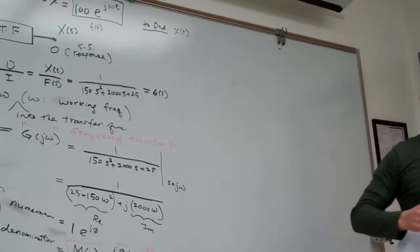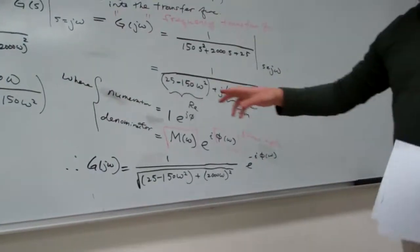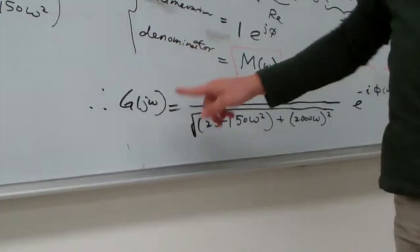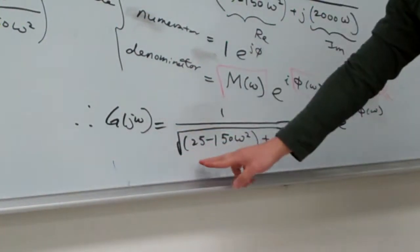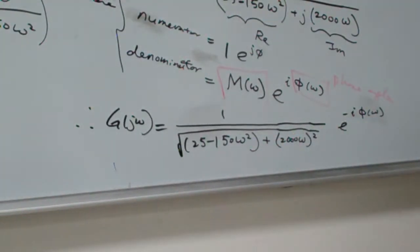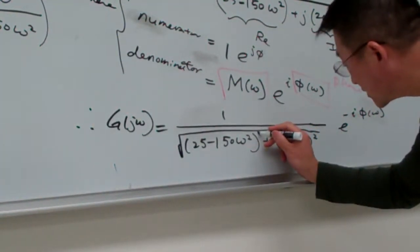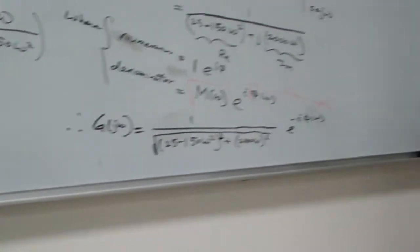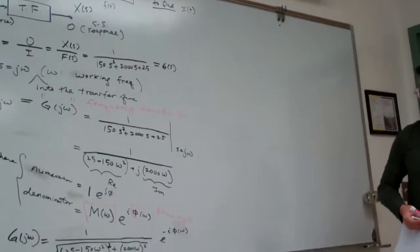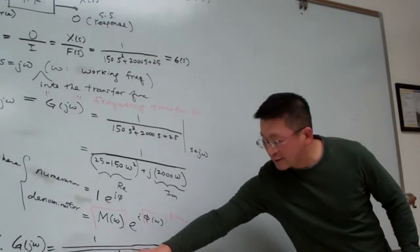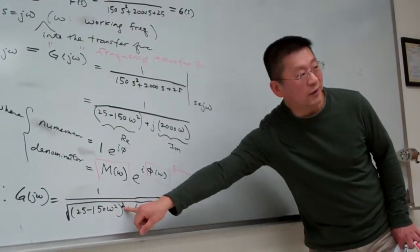Professor? Yes. In the bottom equation for d of j omega, in the square root, should that first part be squared? Oh yes, yeah, sorry. It's a square root. That's a good catch. Yeah, thank you. So here I missed the square, so add it up here.